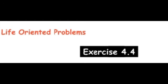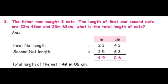In Exercise 4.4, we are going to do question number two. A fisherman bought two nets. The length of the first and second nets are 23 meters 43 centimeters and 25 meters 63 centimeters. What is the total length of the nets? A fisherman bought two nets with two different lengths, so shall we go to the solution part?